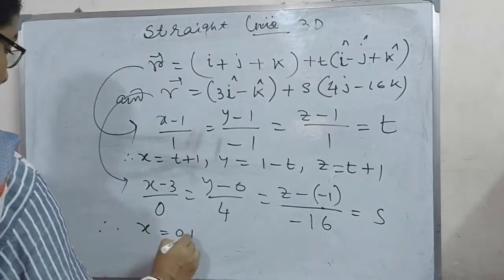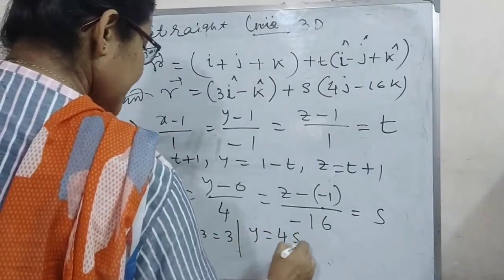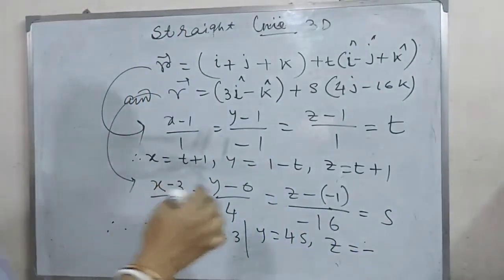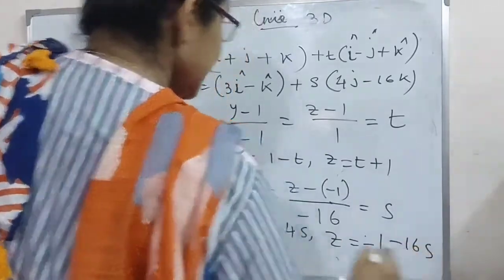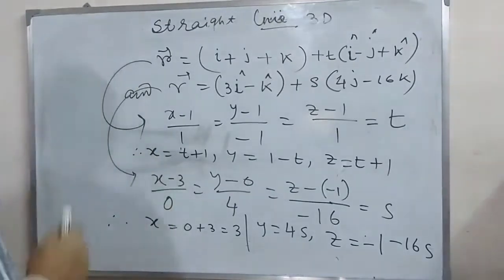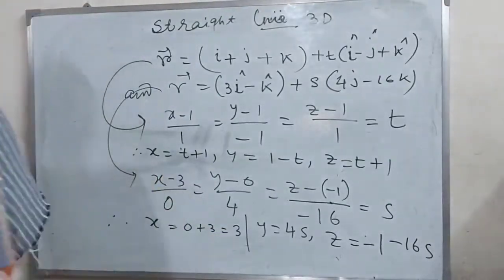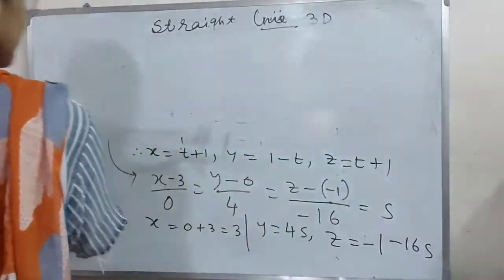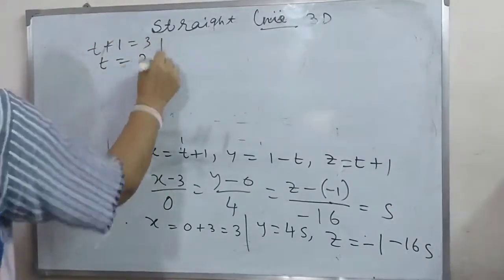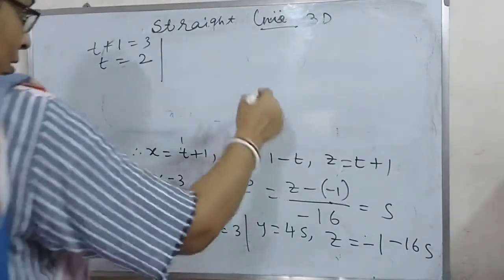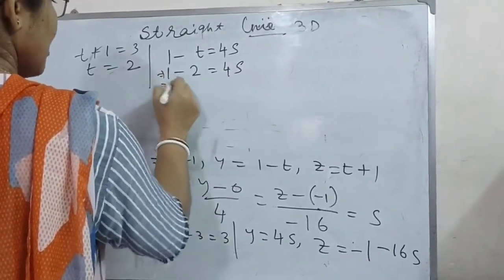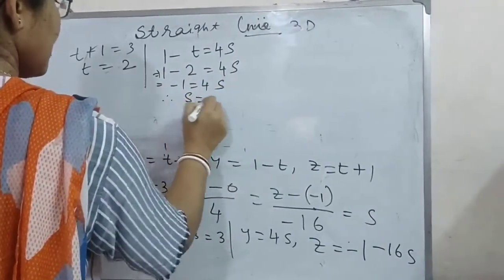From these two equations I equate x-coordinates: t plus 1 equal to 3, so t equal to 2. Then equating y-coordinates: 1 minus t equal to 4s, that means 1 minus 2 equal to 4s, so minus 1 equal to 4s, that means s equal to minus 1 by 4.